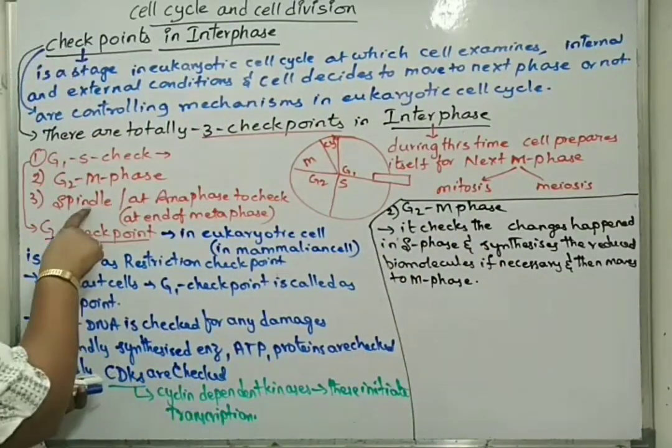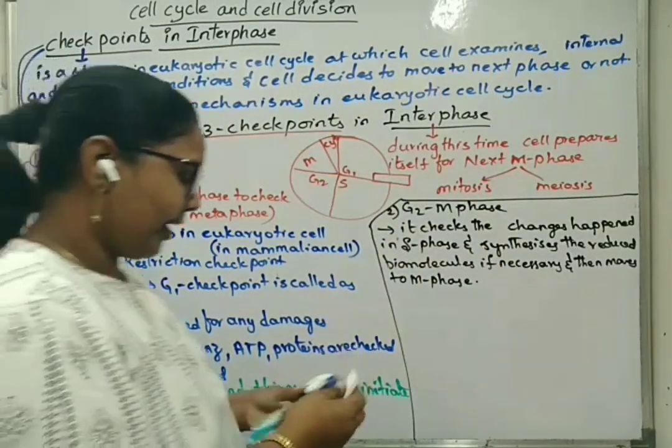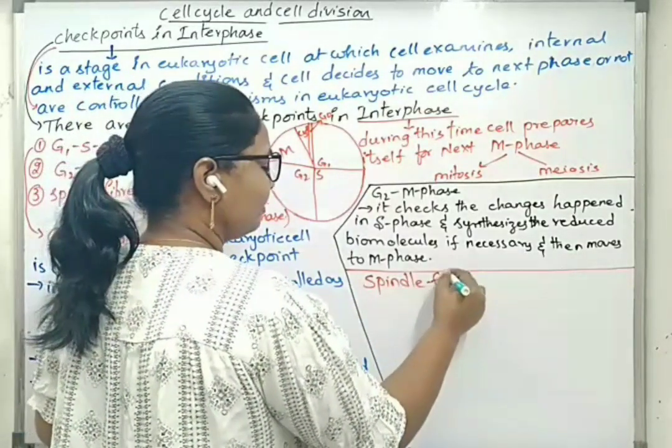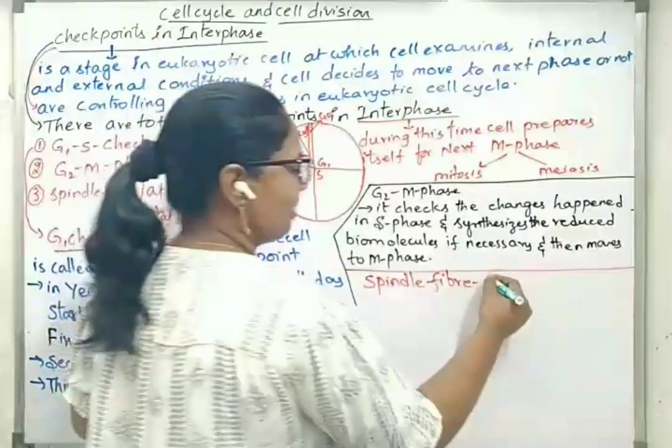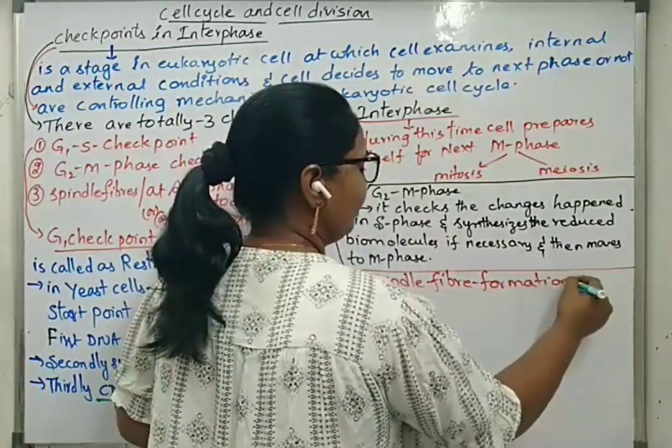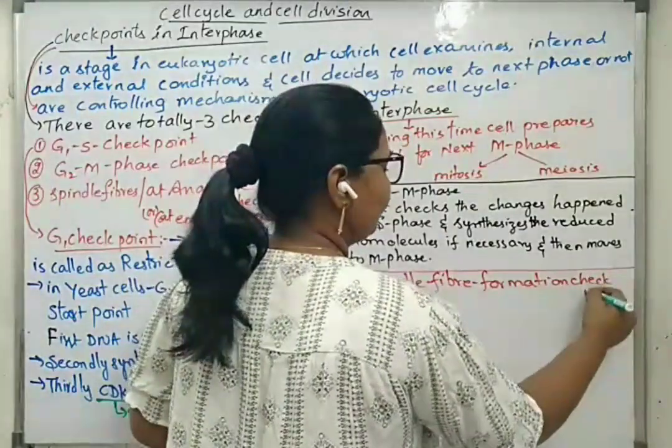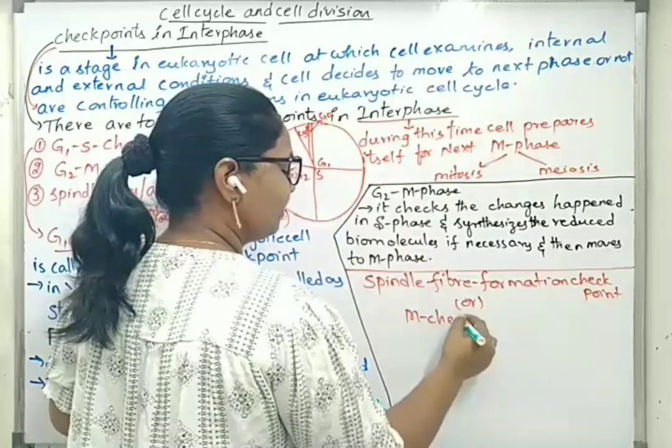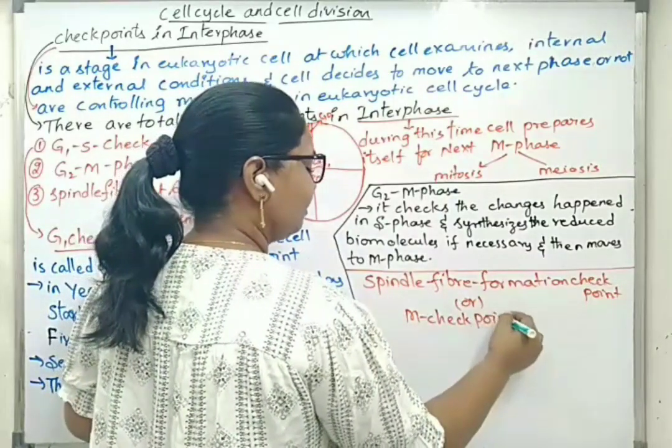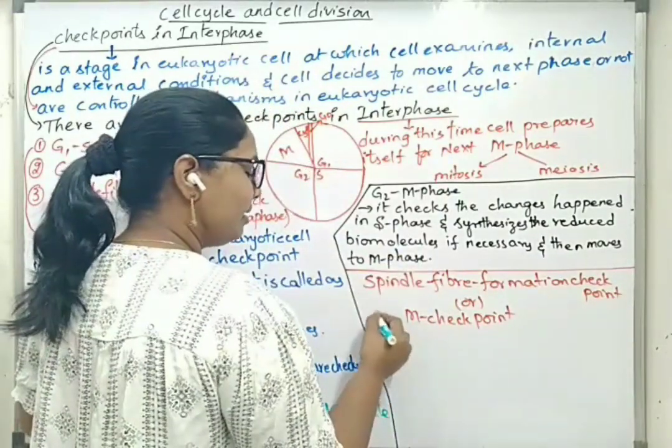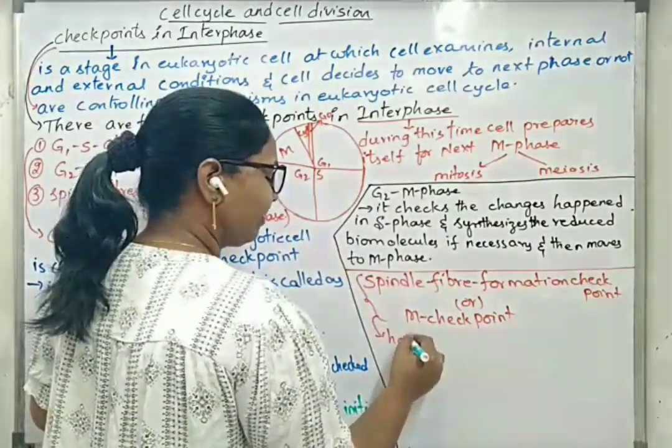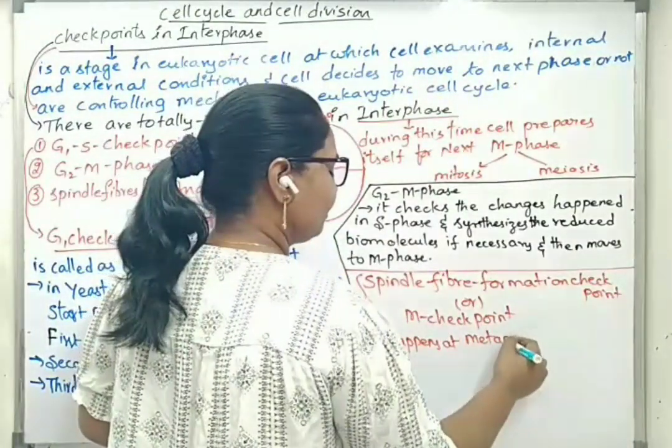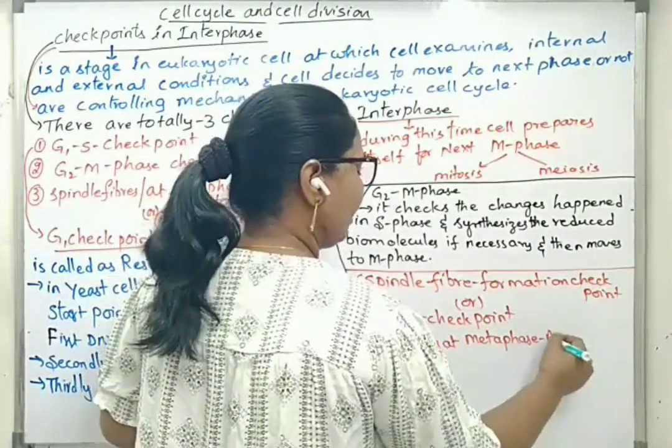Next one, spindle fiber formation checkpoint. This is called as M checkpoint. This happens at metaphase-anaphase transition.